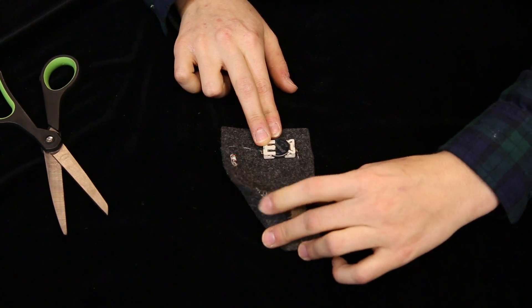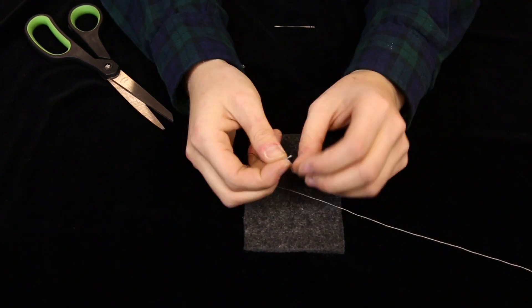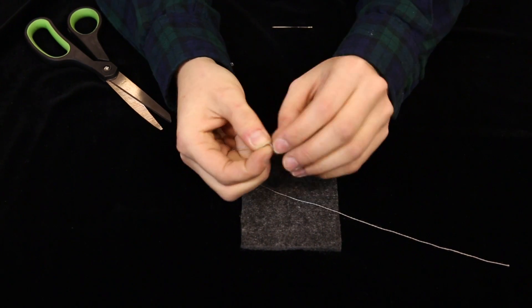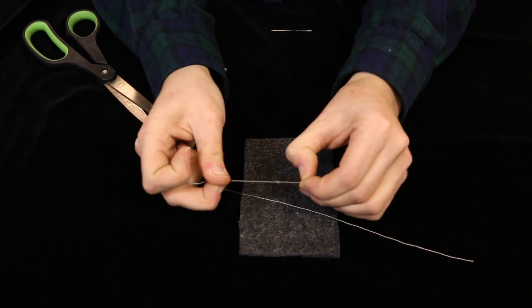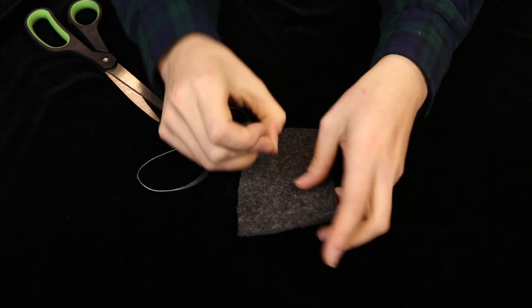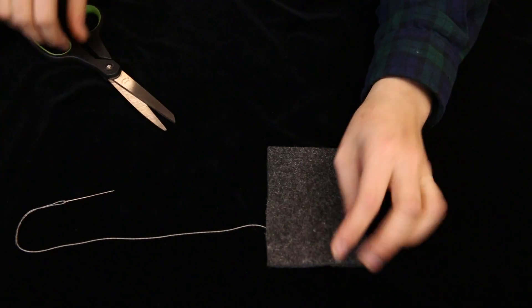No battery holder? No problem! Let's make our own with the same supplies. Start by knotting your conductive thread on one end about three to four times. Use the other end to thread the needle and then sew down into your felt from the top side and trim the tail.